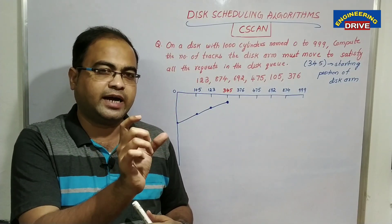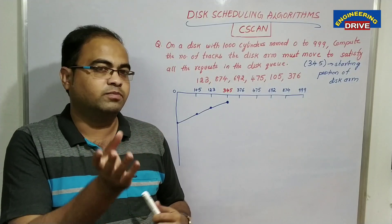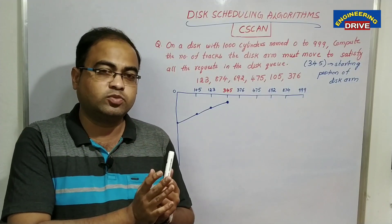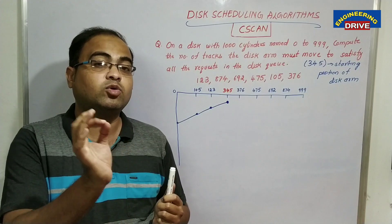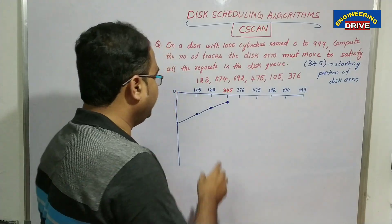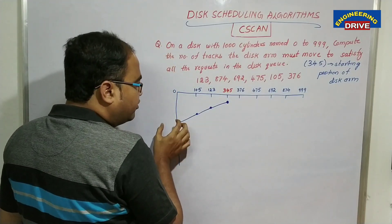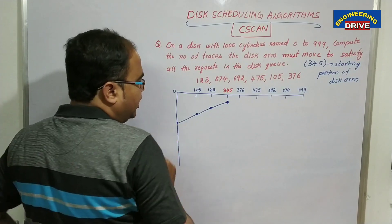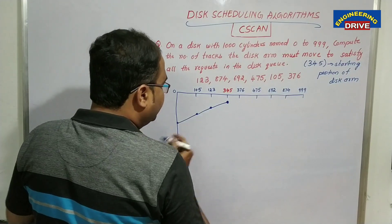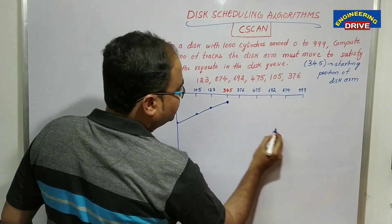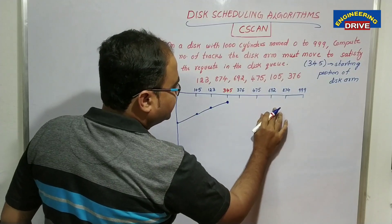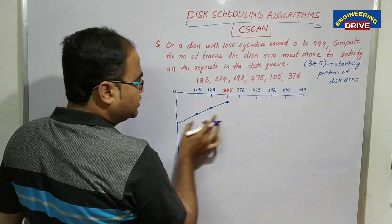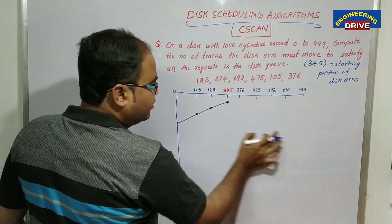The one thing that is added is 'circular.' The previous algorithm is just the scan disk scheduling algorithm. In circular scan, once we reach request 0, it will not serve the remaining numbers — that is 376, 475, 692, and 874. These are the four left-out numbers; it will not serve those numbers from position 0.